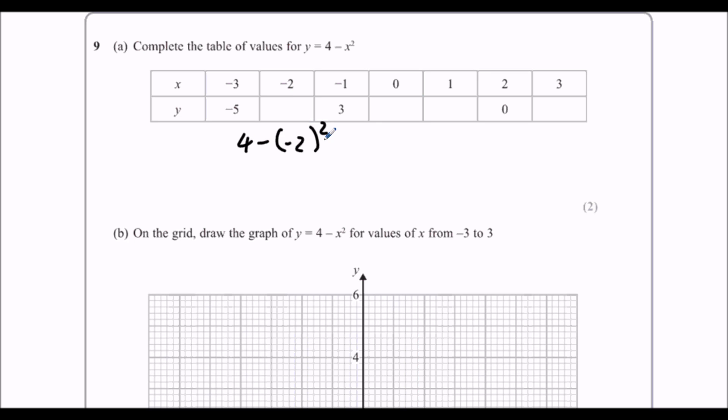So, 4 minus minus 2 squared, that should give you 0. 4 minus 0 squared should give you 4. 4 minus 1 squared should give you 3. And 4 minus 3 squared should give you minus 5.